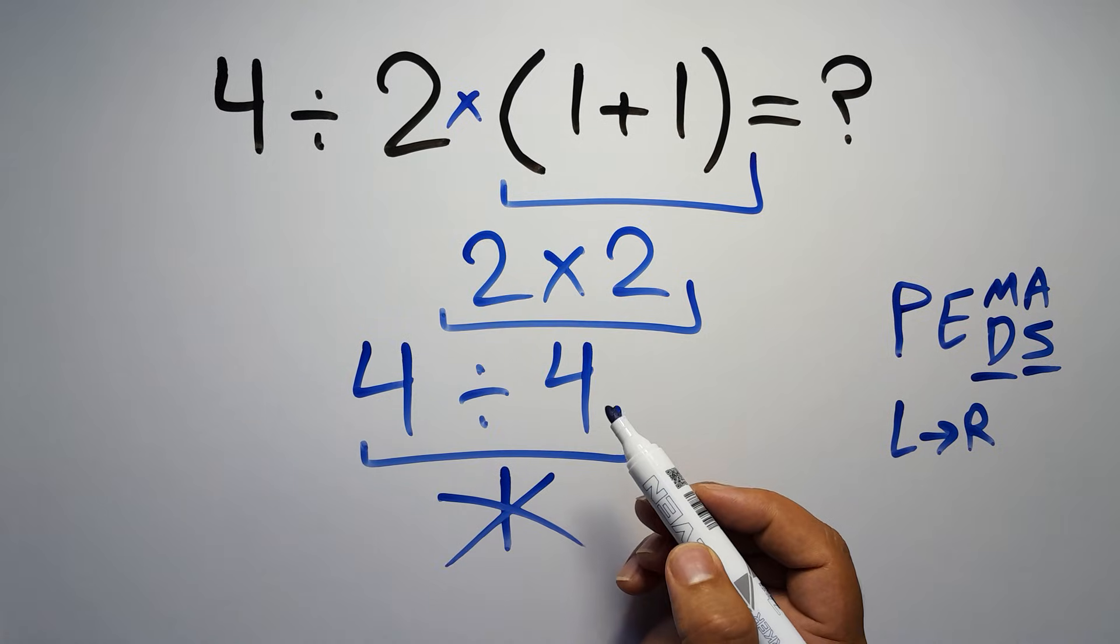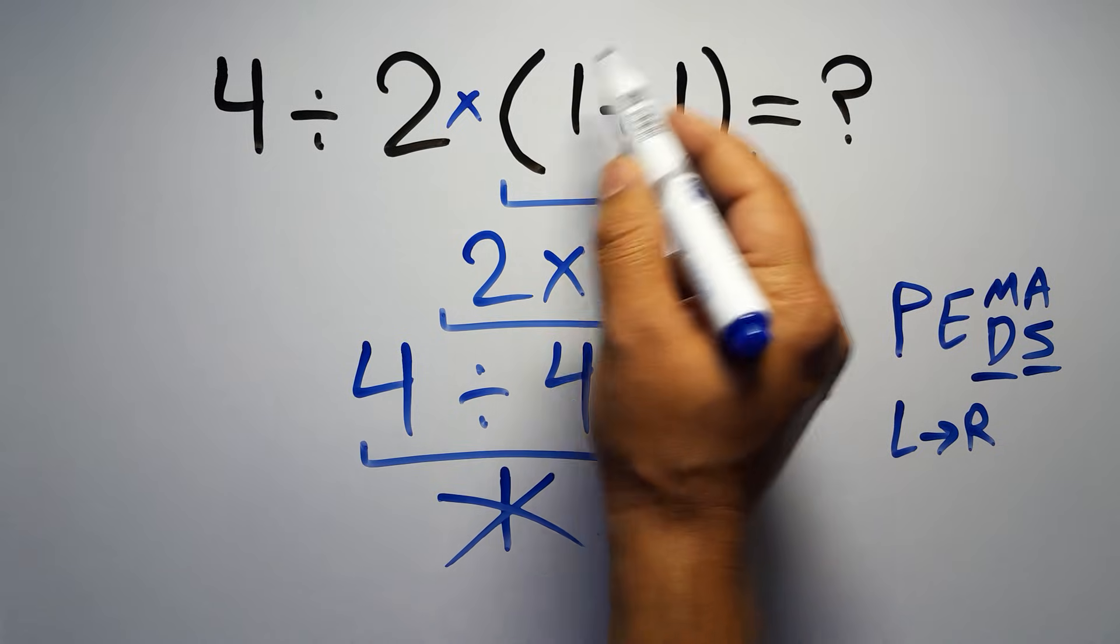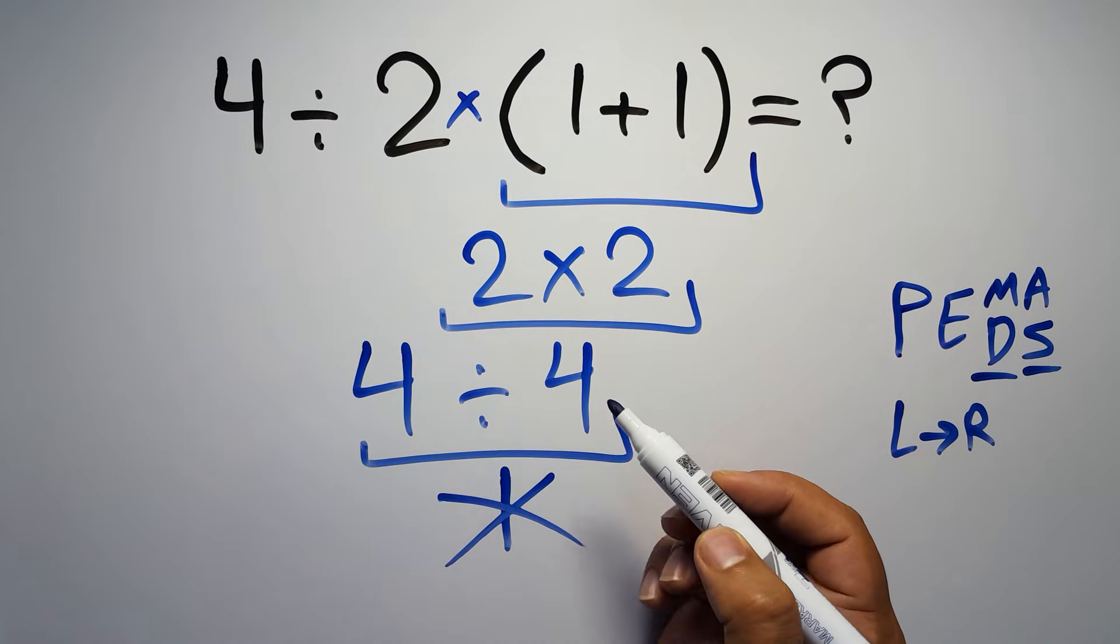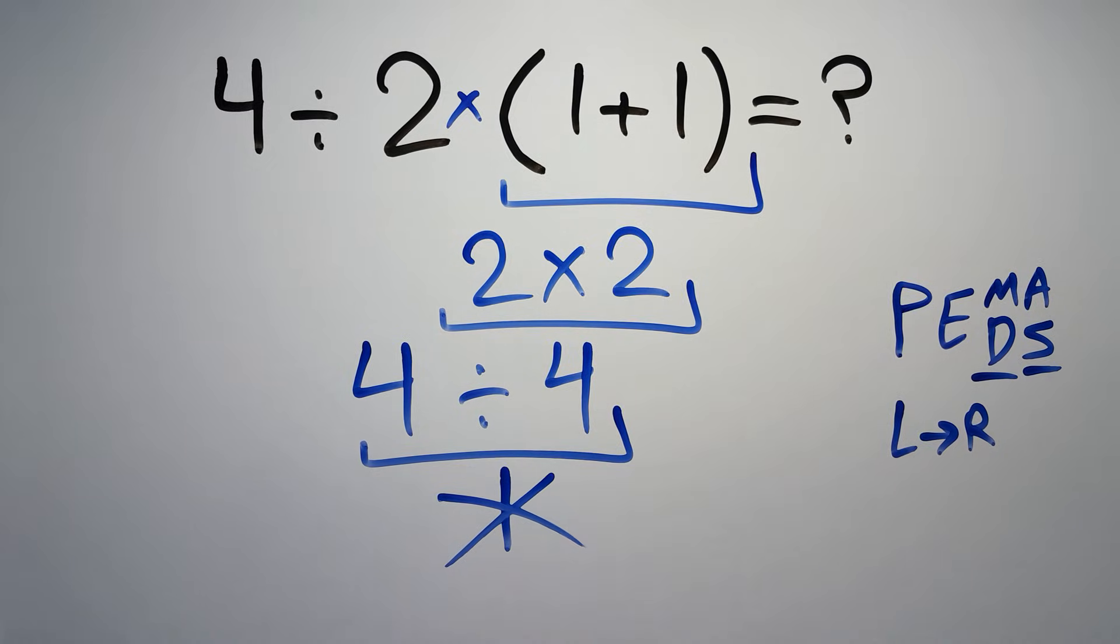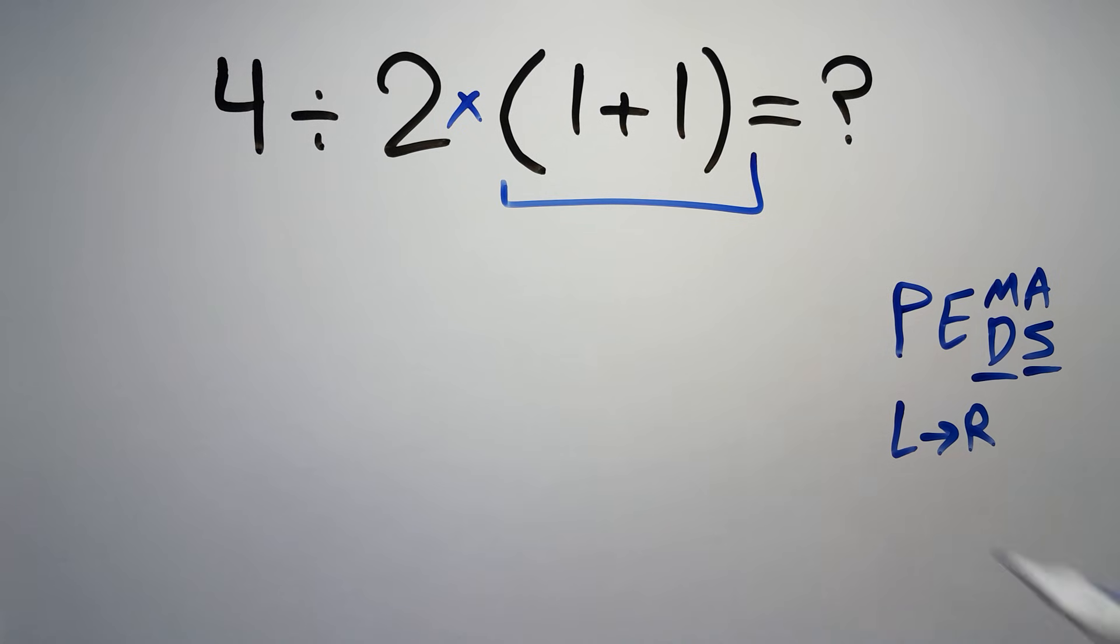the multiplication sign for brevity. So according to PEMDAS, first we have to do this parentheses, then this division, and finally this multiplication. If we do this multiplication before this division, it is wrong. So first, this parentheses: